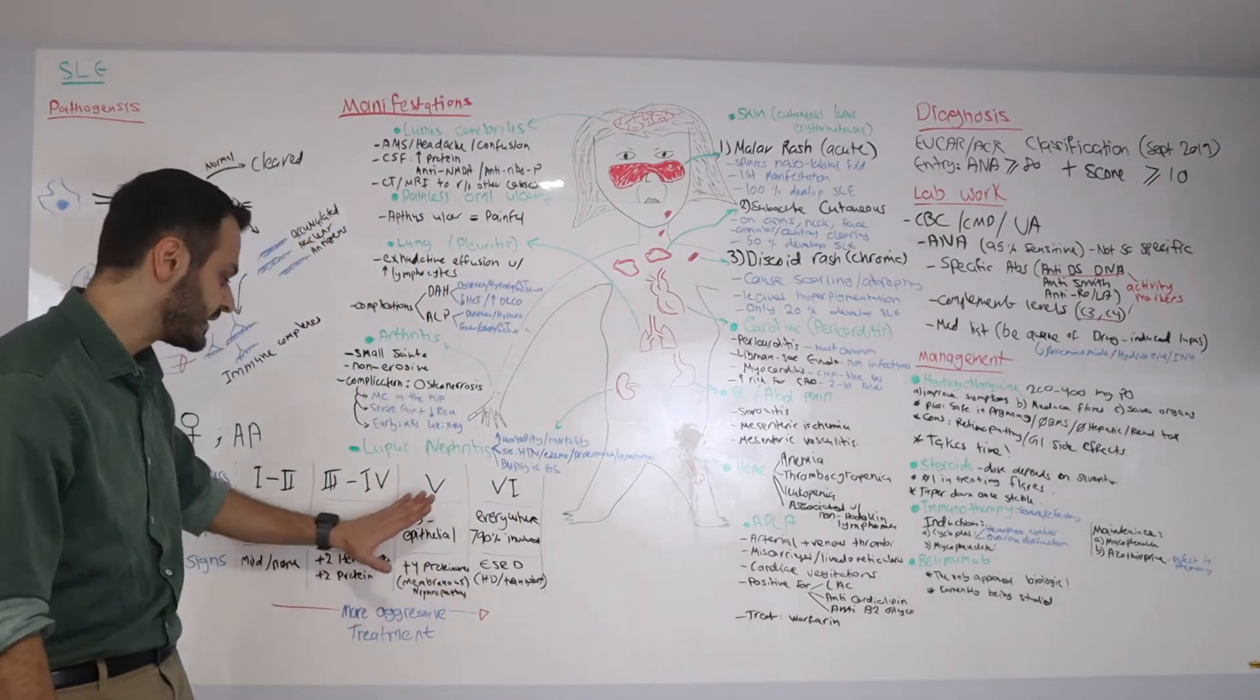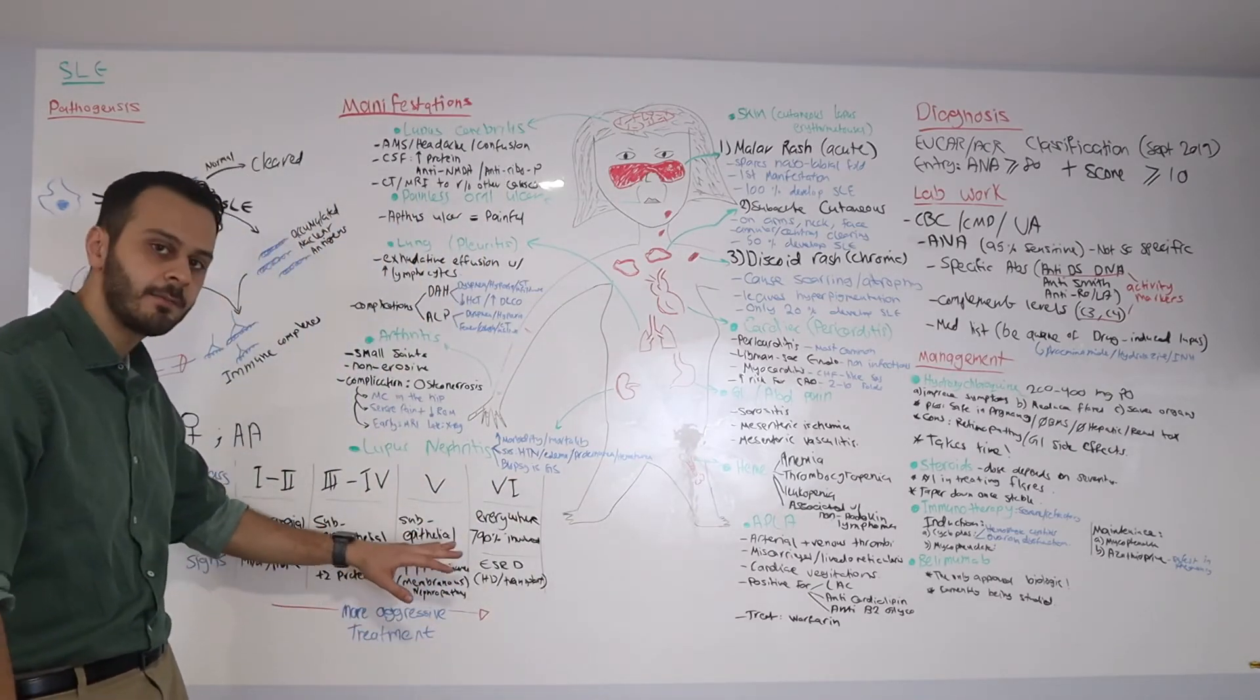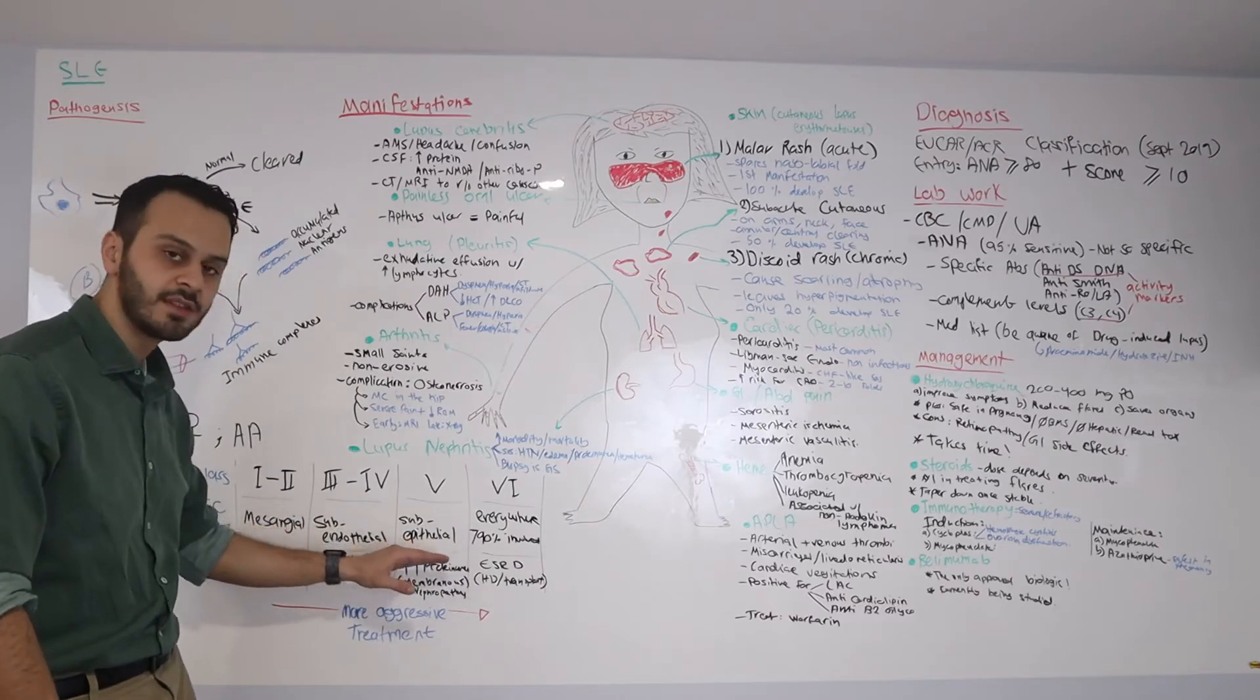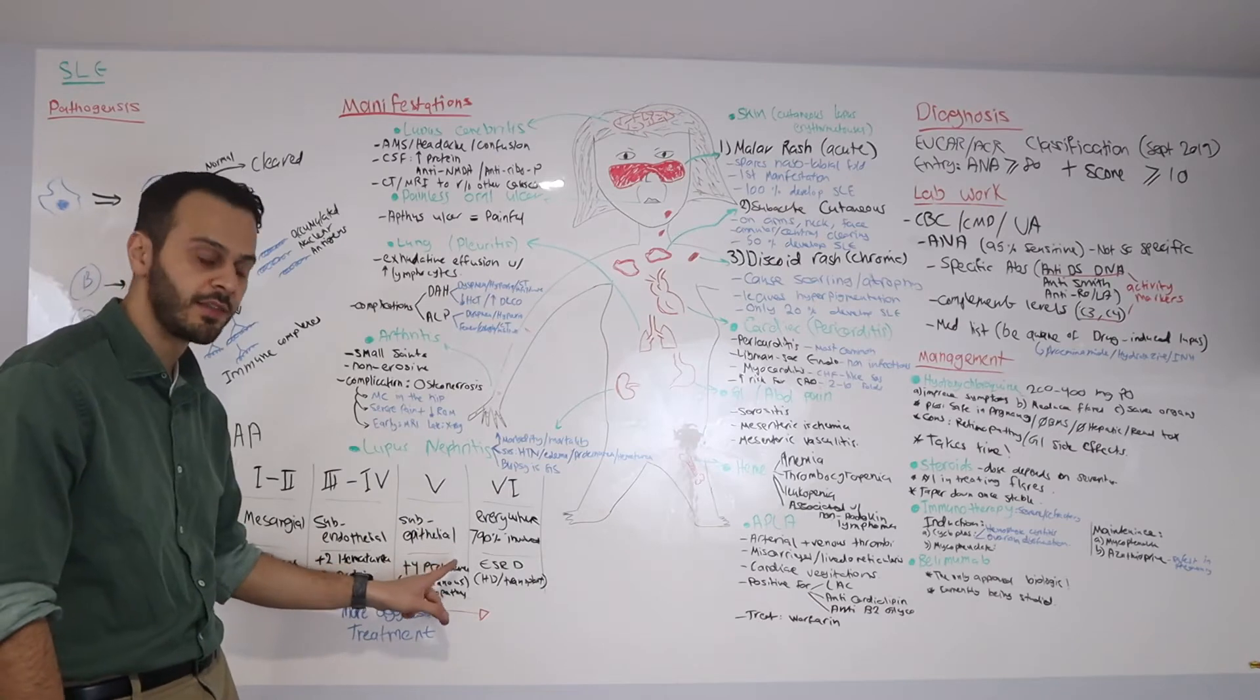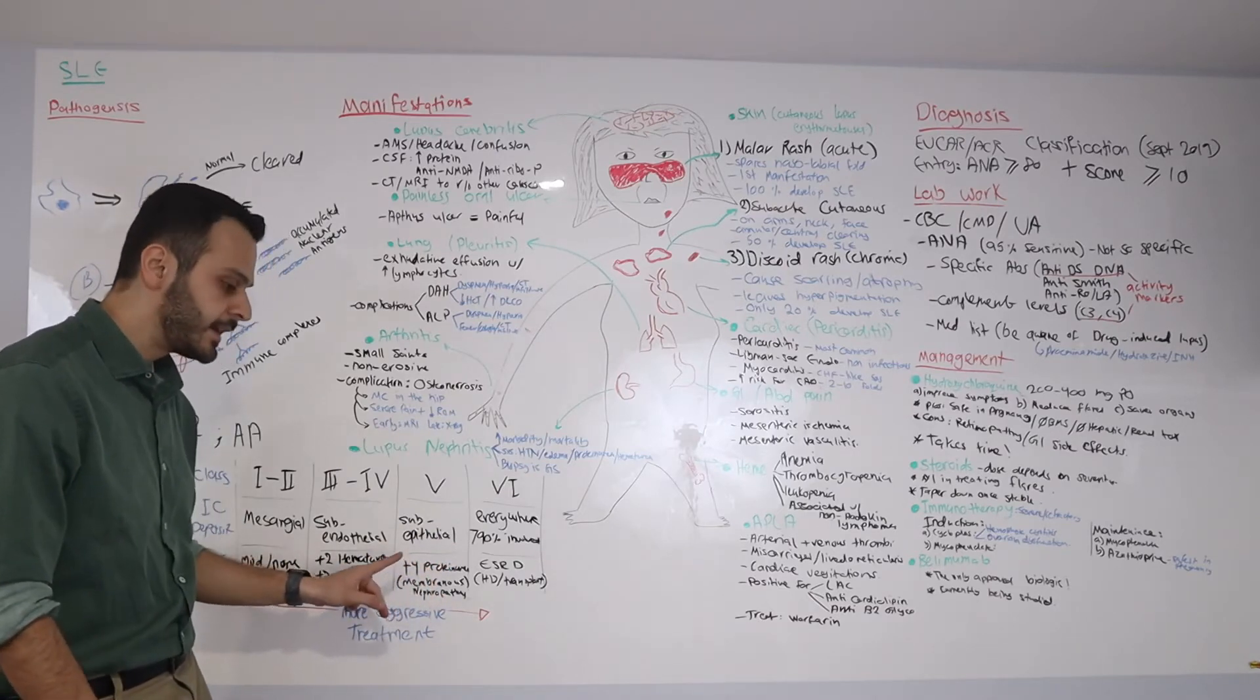Once the immune complexes start to deposit there, that will cause damage to this basement membrane, and you will start to see leaking of significant amounts of protein in the urine, plus 4.